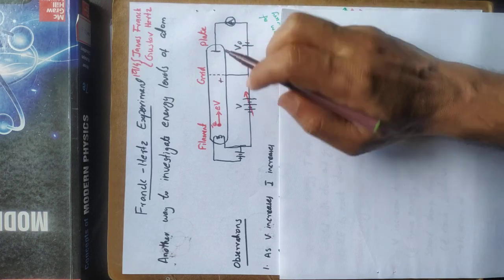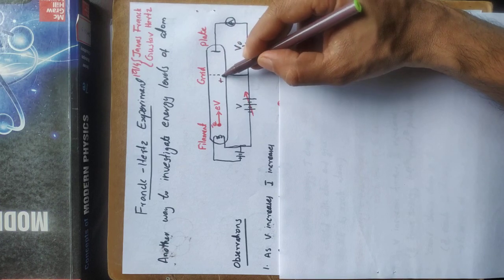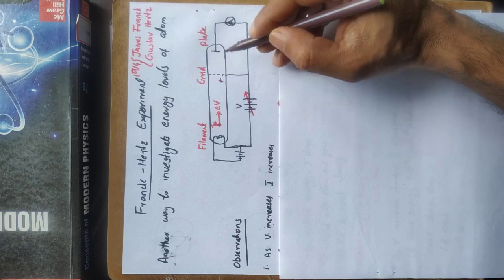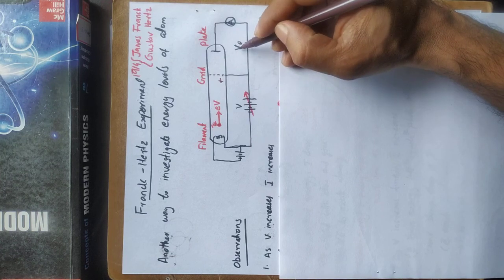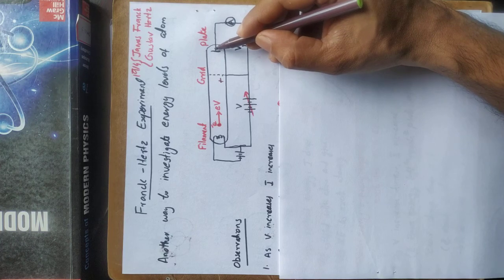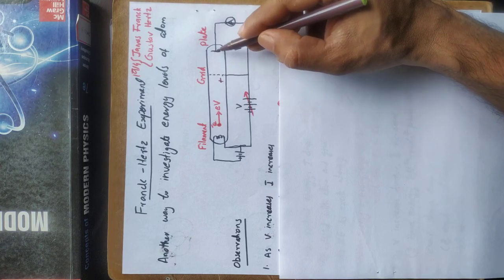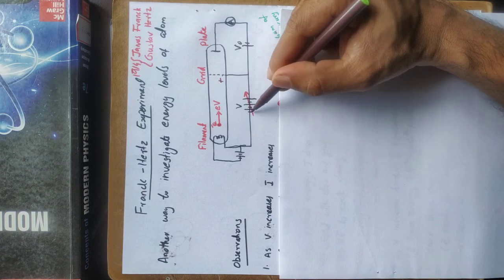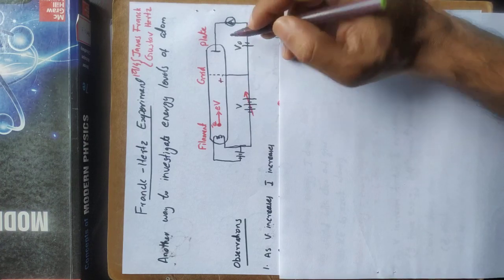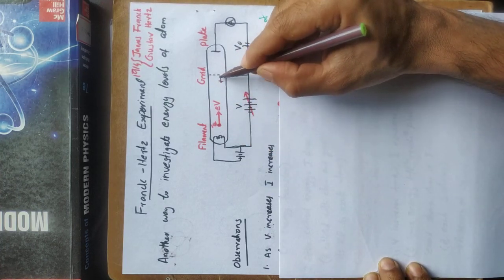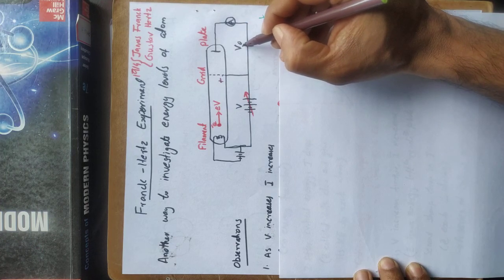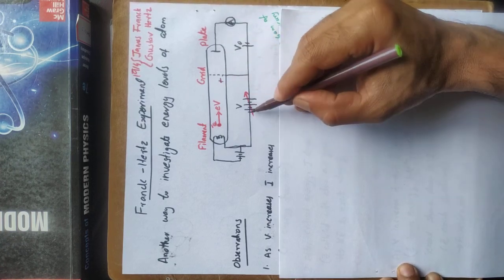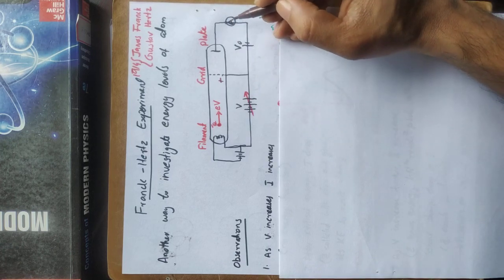That is the experimental arrangement. A small potential difference V0 is applied between the grid and the collecting plate to prevent electrons having energies less than a set minimum energy from contributing to the current. By varying the accelerating potential, we study the plate current.